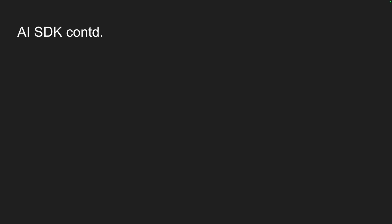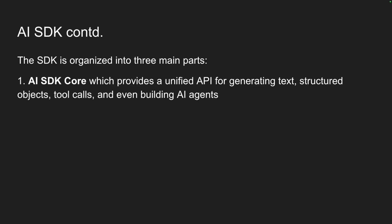Let me explain what the AI SDK actually brings to the table. It is organized into three main parts. First, we have AI SDK Core, and this is the foundation, which gives us a unified API for generating text, structured objects, tool calls, and even building AI agents. All the background operations you'll need start here.